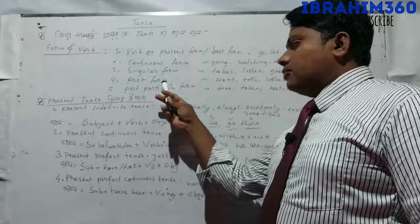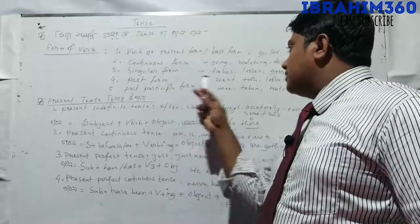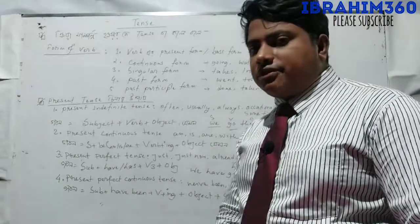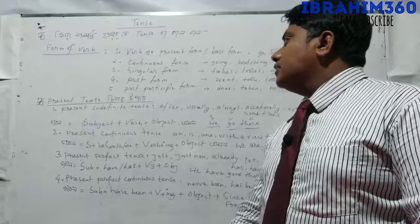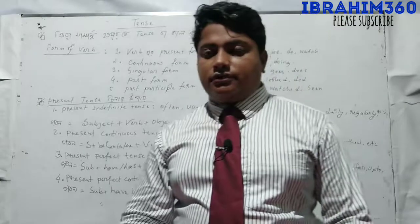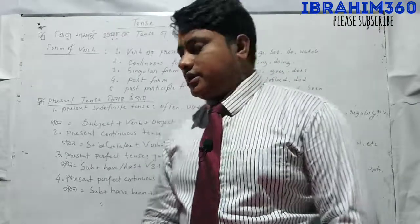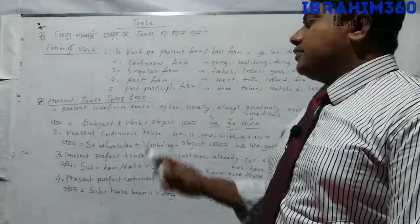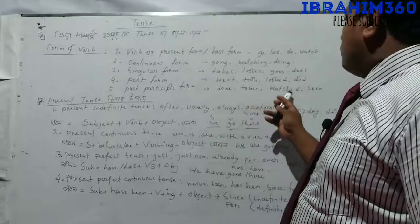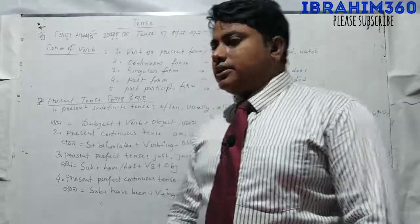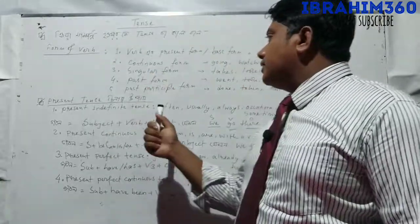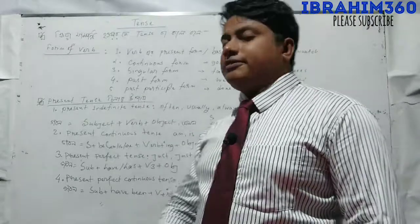The first form: went, took, looked, did — we will call these the past form. Then the singular form: takes, looks, goes, does — we will call these the present form. Finally, the past participle form: done, taken, watched, and seen. So we have the present base form, continuous form, and past participle form.